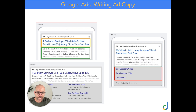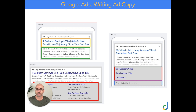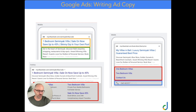On desktop, those little elements in red are called site link extensions. I'm not going to focus on extensions today — you've also got call extensions in blue — I'm just focusing on headlines and descriptions. But by adding site link and call extensions on mobile, you can double the size of your ad, so it is an important element to consider.